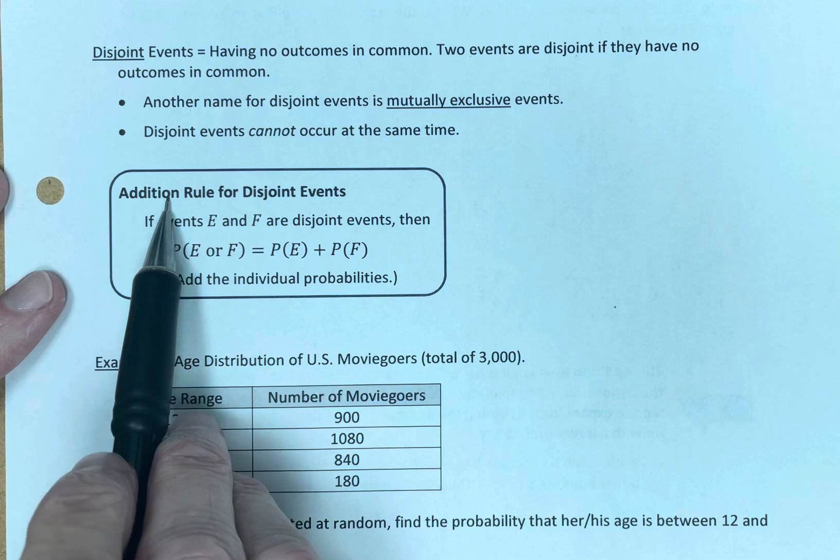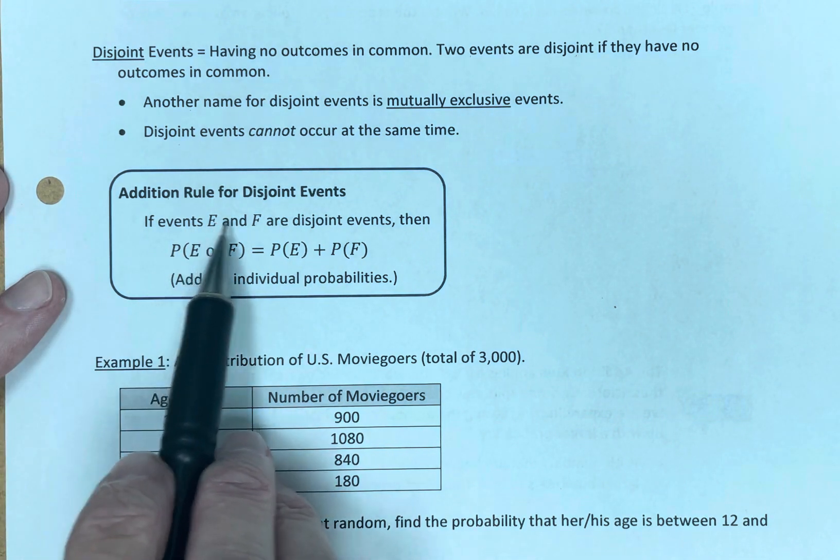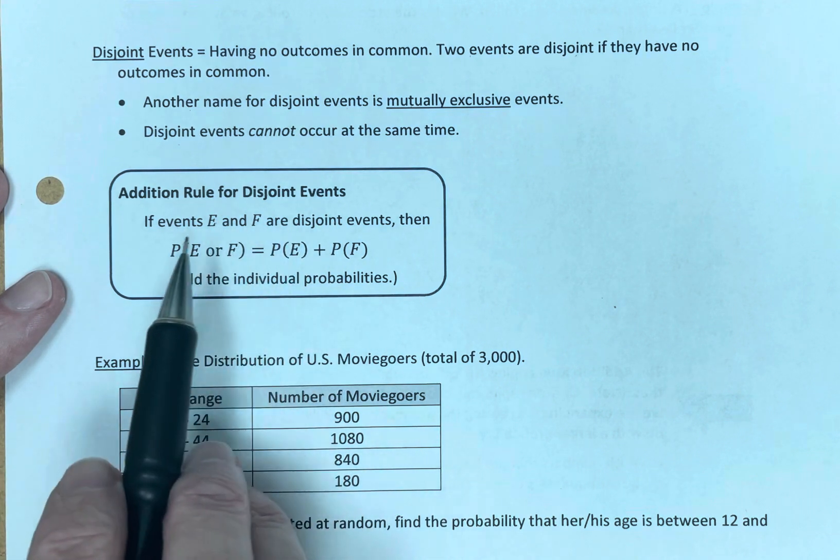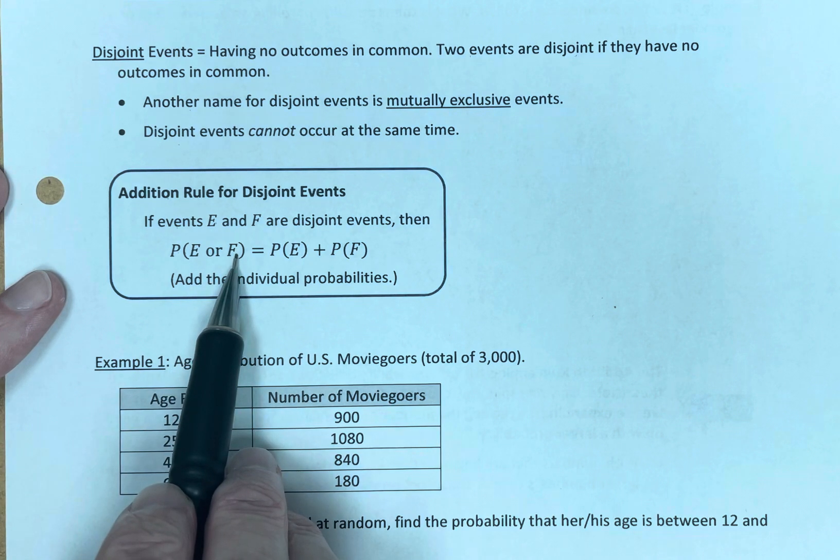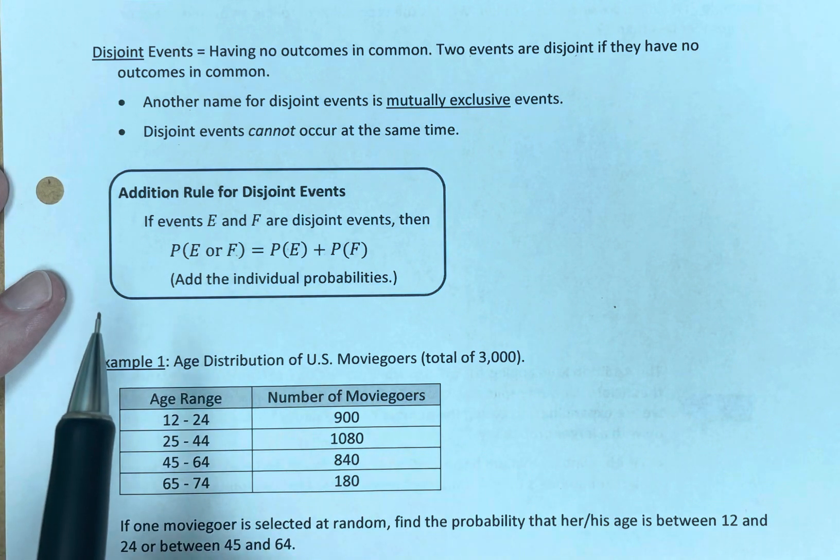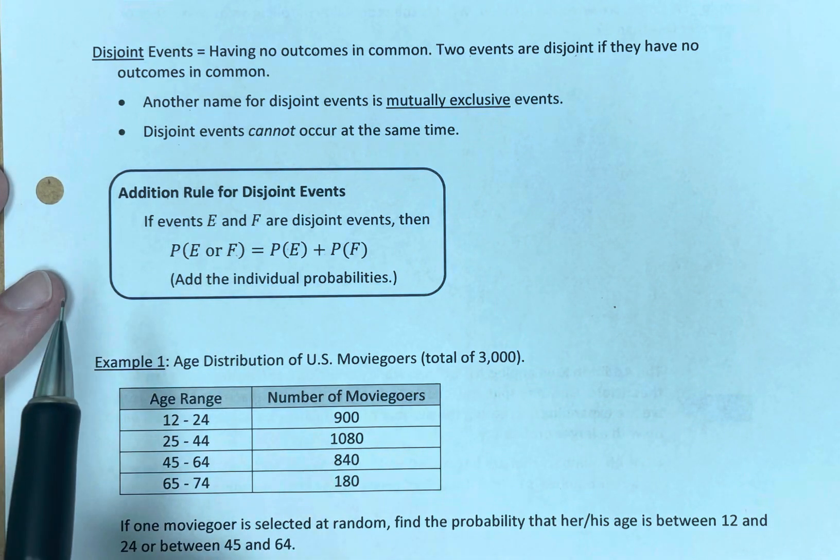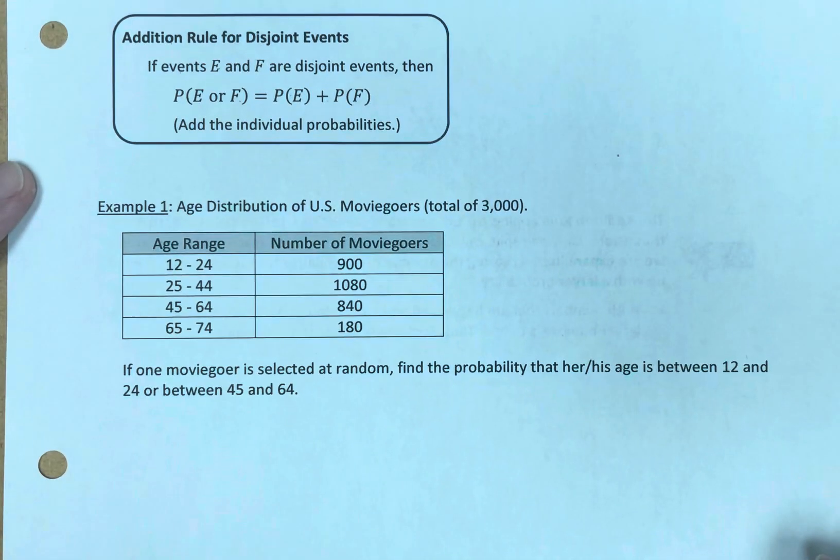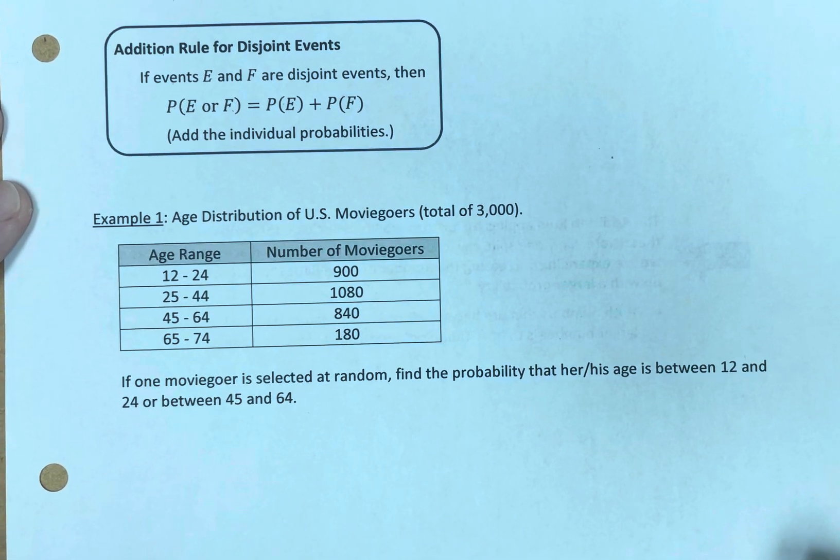So what is the addition rule for disjoint events? Well, if events E and F are disjoint, then the probability of E happening or F happening is simply the probability of E plus the probability of F. You simply add the individual probabilities if they're disjoint. Let's take a look at an example of that.